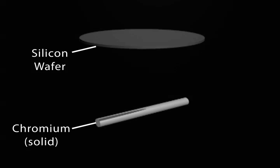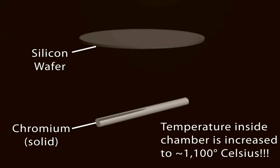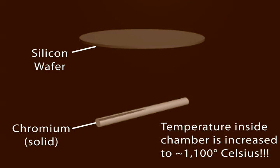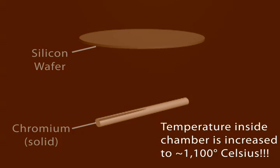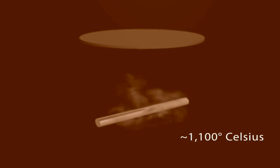The chamber is then heated to a temperature that changes the state of the metal from solid to gas. For chromium and copper, this temperature is approximately 1,100 degrees Celsius.